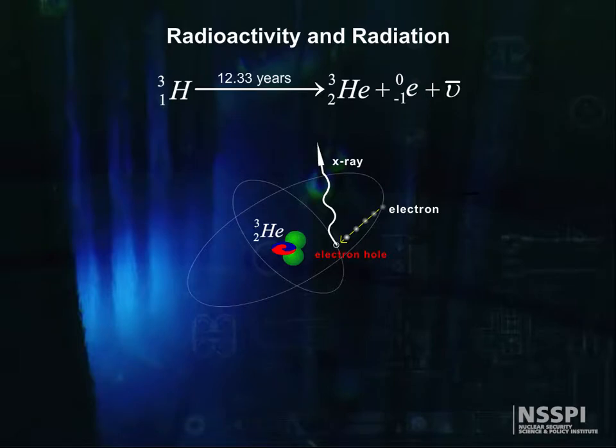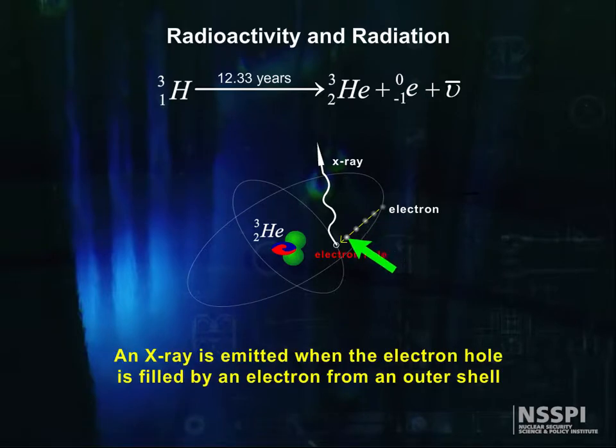However, helium needs two electrons to be neutral, so the electron falls into the new helium orbital, releasing an x-ray. When another electron is eventually captured, another x-ray is emitted.